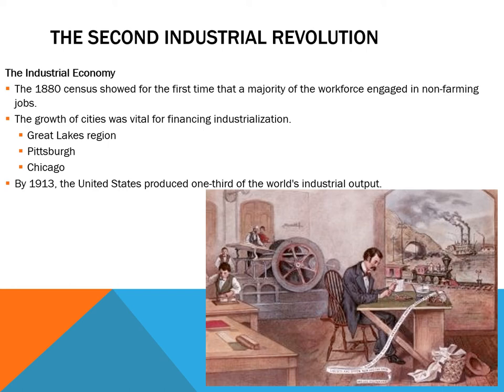The industrial world we have now is why I can have two-day Amazon shipping, why I don't need to farm, why I can engage in things I want to. Prior to this point, even education and college didn't exist as we can see it today. As America continued to industrialize, some regions became more concentrated centers of specific industries: Pittsburgh for steel, Chicago for telecommunications, the Great Lakes for oil. This is one of those pivotal moments for the United States — so much so that by the dawn of World War One, we were producing one third of industrial output for the whole world.